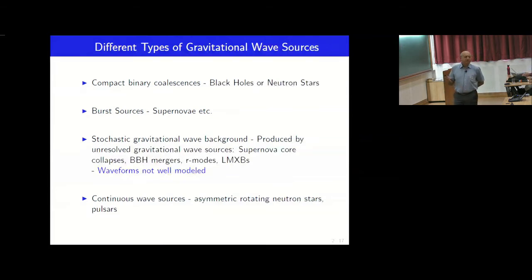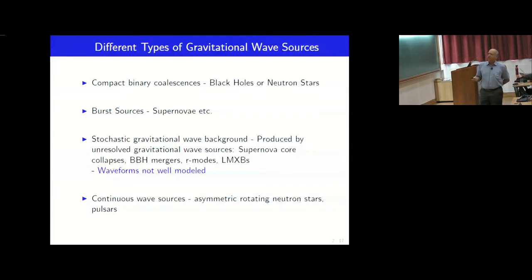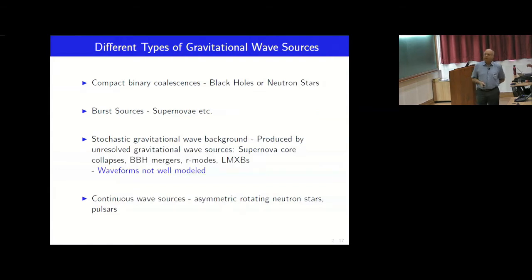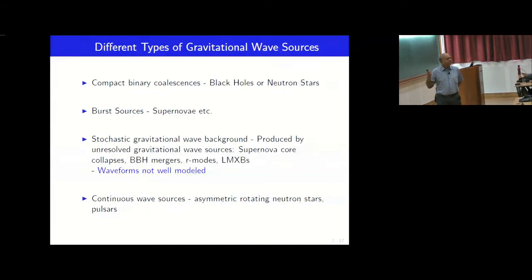Then there are burst sources like supernova. Then there are stochastic. There is a stochastic gravitational wave background produced by unresolved gravitational wave sources: supernova core collapses, black hole mergers, R modes, LMXBs, whatever. But here the waveforms are not well modeled and so the search methods have to be different.